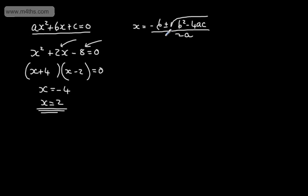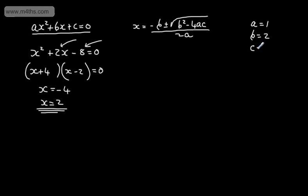Let's just see how the quadratic formula works with this equation. Looking at the value of a, it's 1 — we've got 1x squared. So a is positive 1, b is going to be equal to positive 2, and c is going to be equal to negative 8.